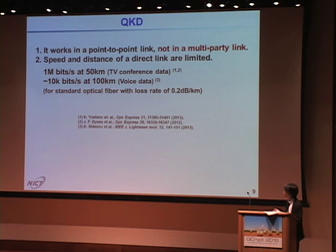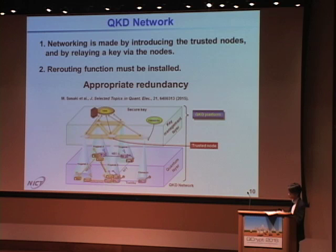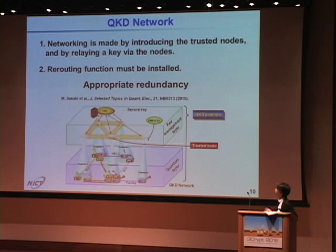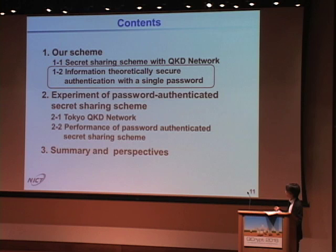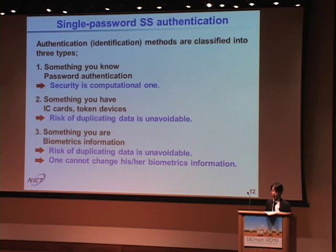QKD works in a point-to-point, not a multi-party link, and speed and distance over direct links are very limited. So a QKD network is necessary. Networking is achieved by introducing trusted nodes and relaying among nodes, and the routing function must be installed to get appropriate redundancies. The following slides show our newly developed information theoretically secure authentication with a single password.